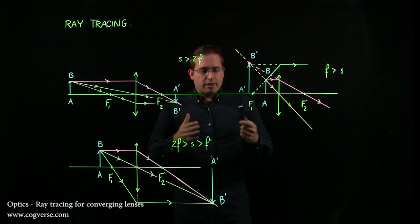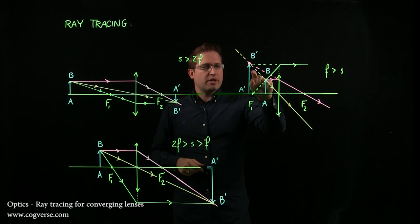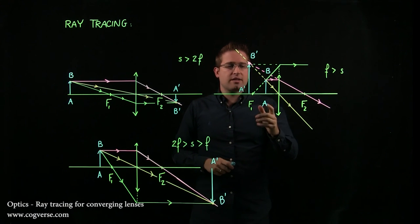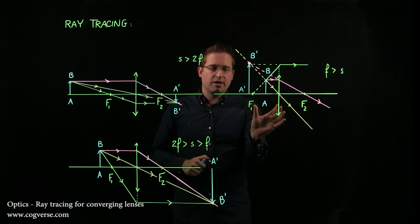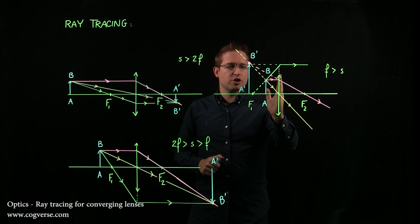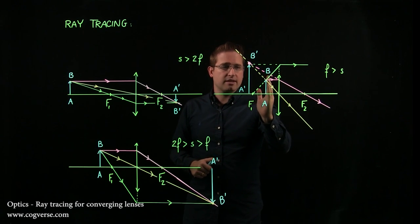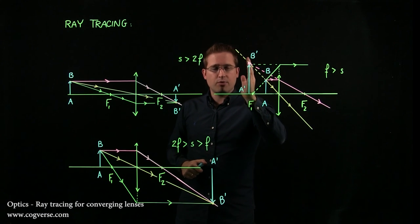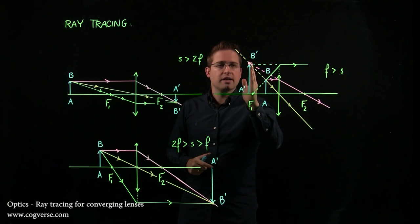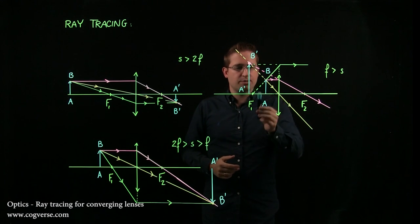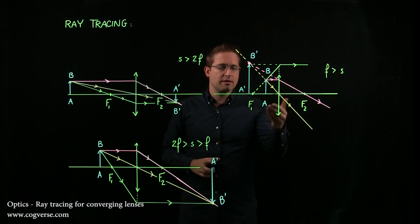So these are the three cases that you need to know. Note that in this one, it's the only case that you get an upright image. And that's interesting because this is in fact a magnifying glass. If you have a converging lens and you bring it close enough to the object that you're trying to look at, you'll have an image that is upright, which is convenient for reading, and enlarged. So that's nice. And this is typically a magnifying glass and we can come back to that in problems.